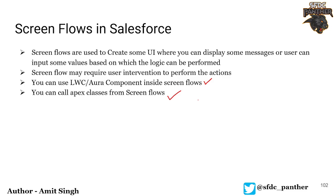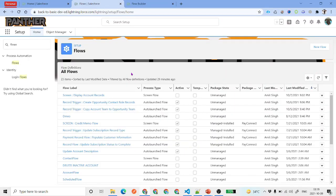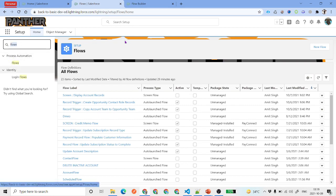We will be talking about record-triggered flows in the coming videos. This is just a basic overview about screen flows. Now let's quickly create one screen flow where we will be putting some static messages. To create a flow, just log into your Salesforce environment, from Setup search for flows, and under the Process Automation category select Flows.